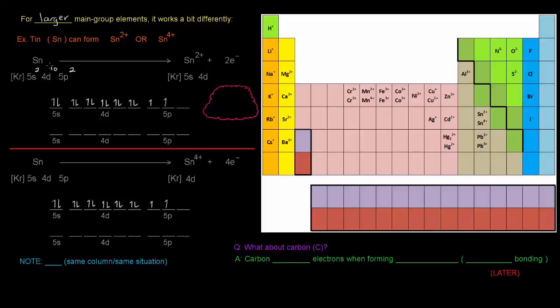Let's think about getting the Sn2+ ion. Going from Sn to Sn2+, it loses two electrons. Which two? It loses the ones in the highest energy level, the 5p, so it becomes 5s2 4d10 5p0. This isn't quite a noble gas configuration.